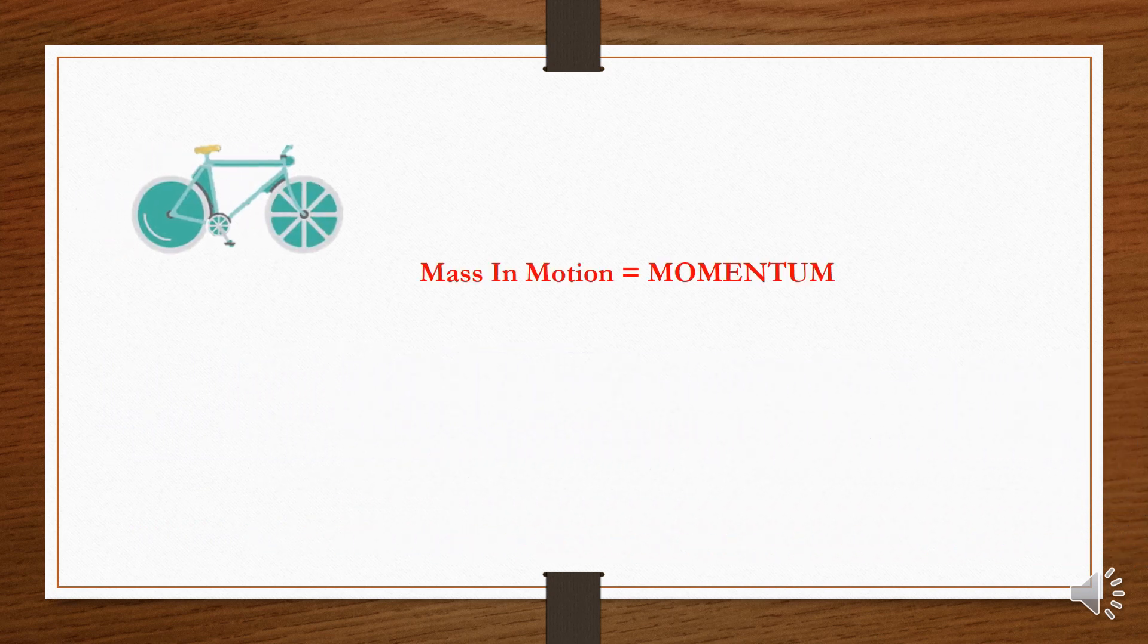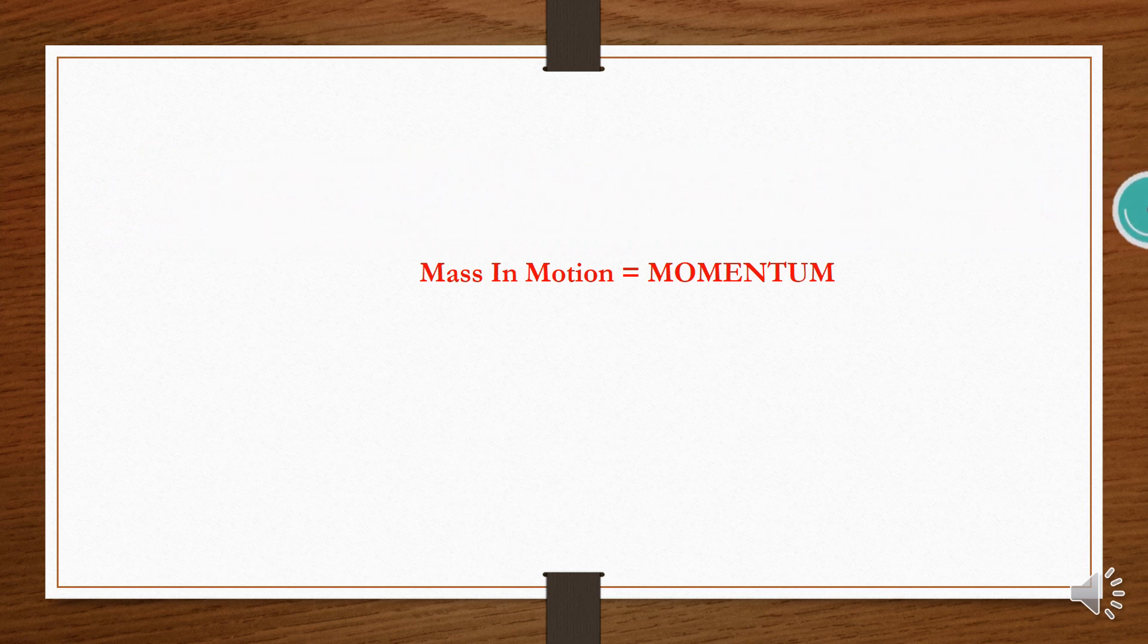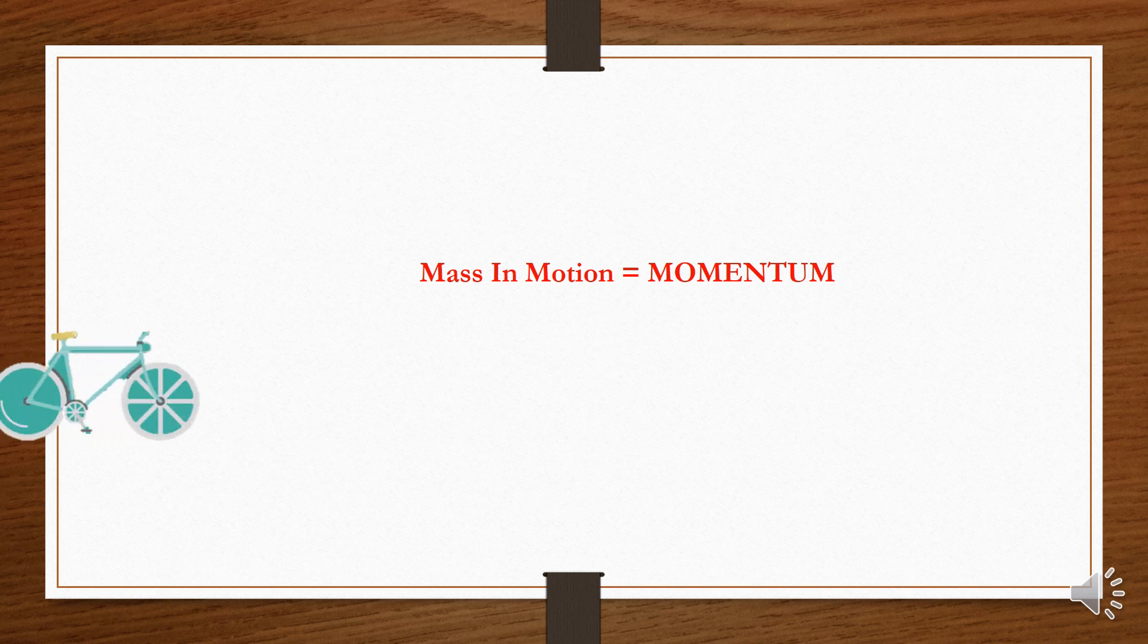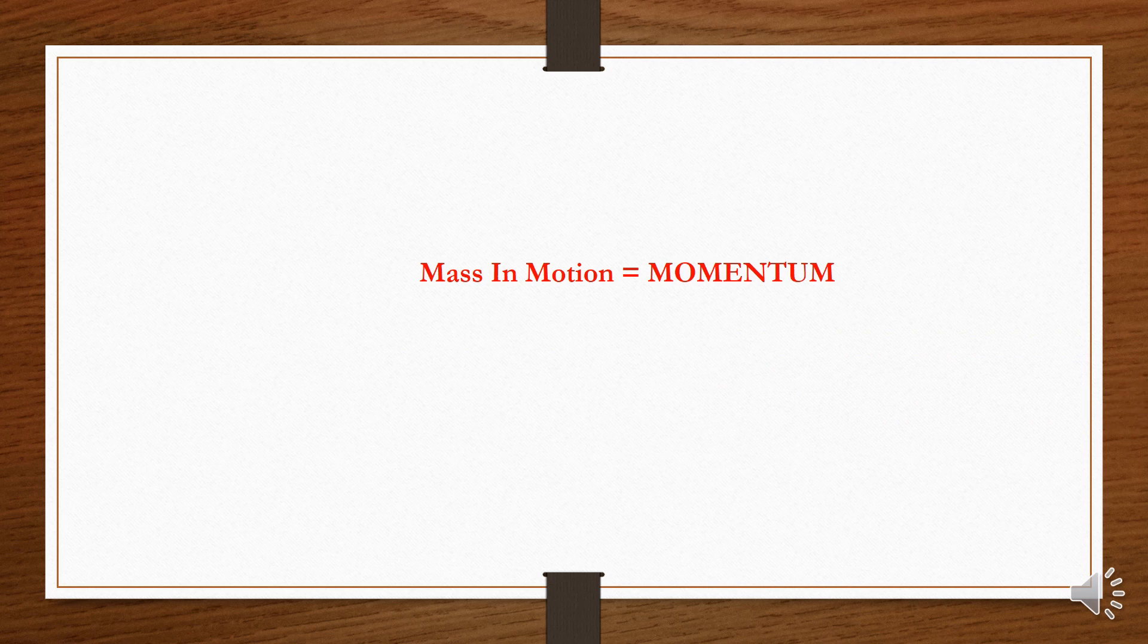The bicycle also has momentum because it has a large speed. But because its mass is less than the truck, its momentum is also less.